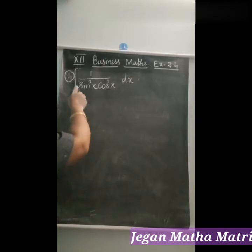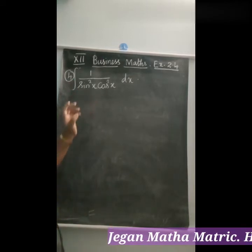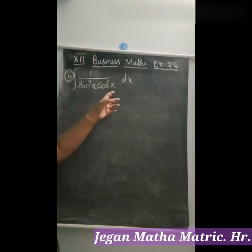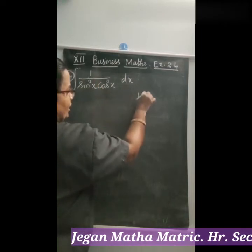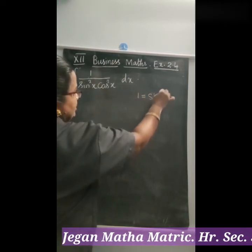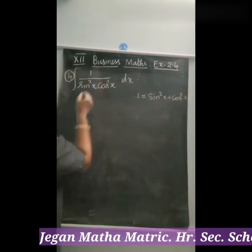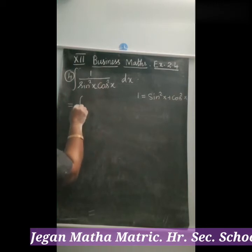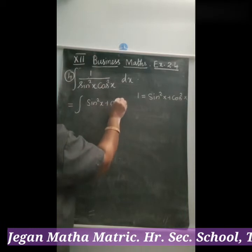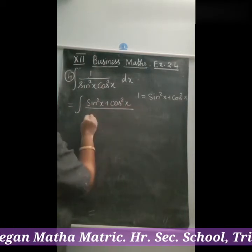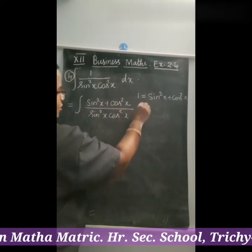Let us see the fourth question: integral of 1 divided by (sin²x cos²x) dx. Instead of 1, we use the identity sin²x plus cos²x equals 1. So the integral becomes: integral of (sin²x plus cos²x) divided by (sin²x cos²x) dx.